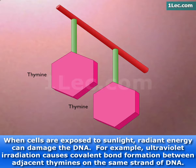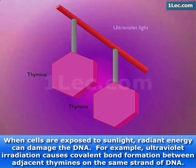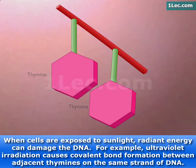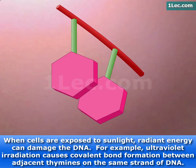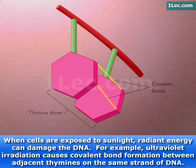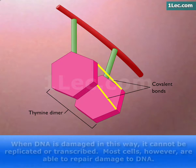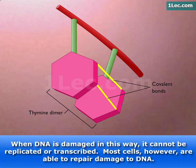When cells are exposed to sunlight, radiant energy can damage the DNA. For example, ultraviolet irradiation causes covalent bond formation between adjacent thymines on the same strand of DNA. When DNA is damaged in this way, it cannot be replicated or transcribed.